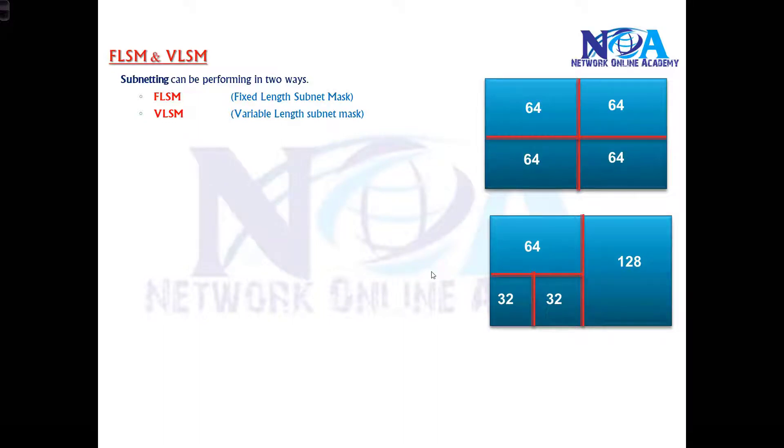Most of the time, requirements will be variable. You may have a network with a hundred hosts, or you may have another department with maybe just 50 hosts, another department with only 30 hosts. In different departments you may have different ranges, or different numbers of users will vary. Based on that, we can do subnetting, which we call VLSM.